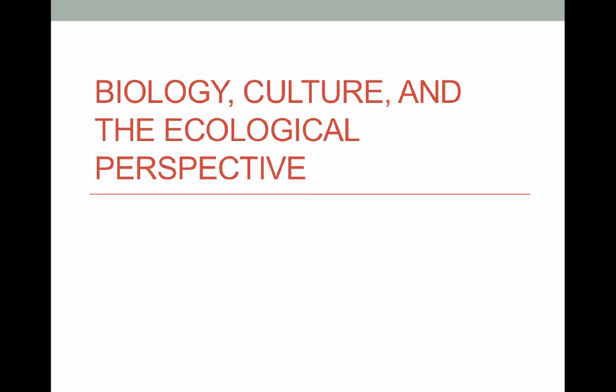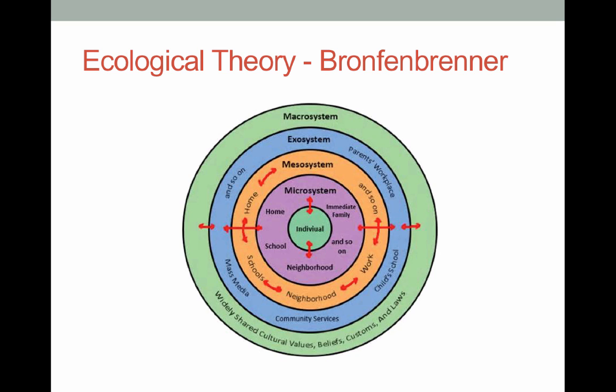Looking at some major theories: biology, culture, and the ecological perspective. The ecological theory was developed by Uri Bronfenbrenner, and it essentially describes a person's experience where the individual is in the center of concentric circles. They are affected by, and in turn affect, the microsystem — those factors in the purple — followed by the mesosystem in orange, the exosystem in blue, and the macrosystem as a whole. Sometimes social workers get very focused on the microsystem because we're often working with individuals and their families, in a home-based setting, a school setting, or at a neighborhood or group level.